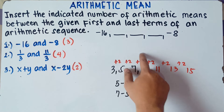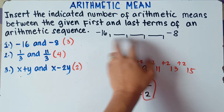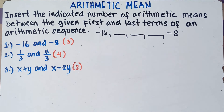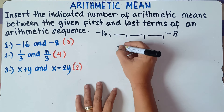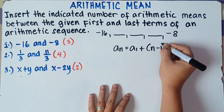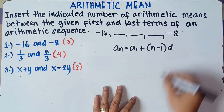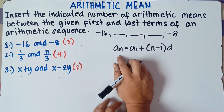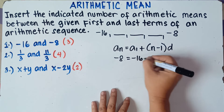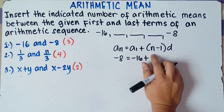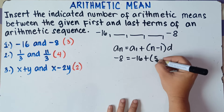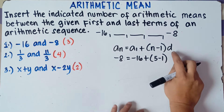Let's find the common difference using the arithmetic sequence formula: a sub n equals the first term plus quantity n minus 1 times the common difference. So a sub n is the last term, negative 8, equals the first term negative 16, plus n — the number of terms. We have 1, 2, 3, 4, 5 — five terms. So quantity 5 minus 1 times d.